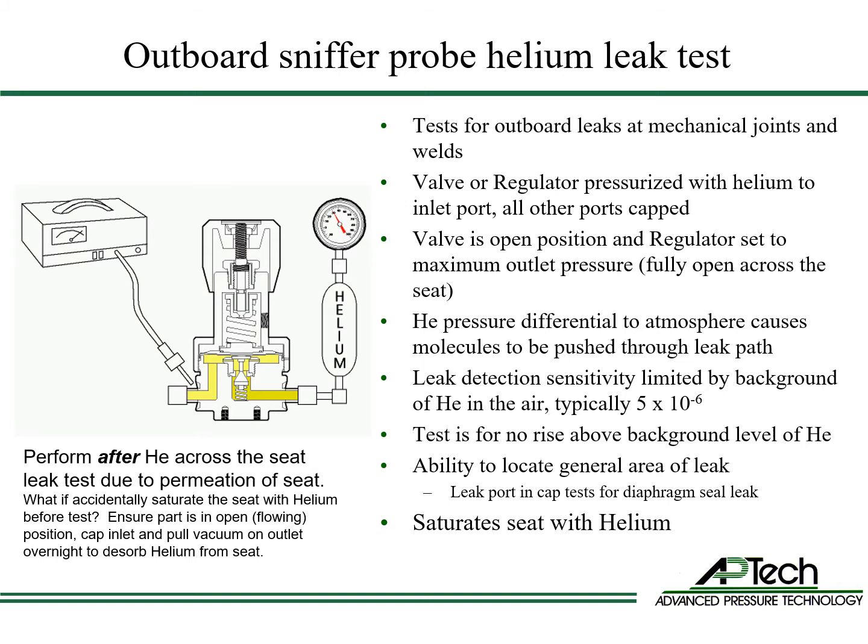The outboard sniffer probe helium leak test is used to test for outboard or external leaks. This method pressurizes the inlet port of the valve or regulator with helium while the device under test is fully open across the seat. The differential pressure between the part's internal cavity and atmosphere surrounding the part pushes the helium through the leak path, and the sniffer probe vacuum pulls the helium from atmosphere into the detector. APTEC tests all mechanical joints and welds. The leak sensitivity is limited by the concentration of helium in the atmosphere, or about 5×10⁻⁶, but this concentration varies. The part passes if the sniffer probe does not detect a rise above background levels of helium. This test has the ability to locate the general location of the leak using the sniffer probe. Because this test saturates the seat with helium, it must be done after a helium across-the-seat leak test to avoid saturating the seat with helium.